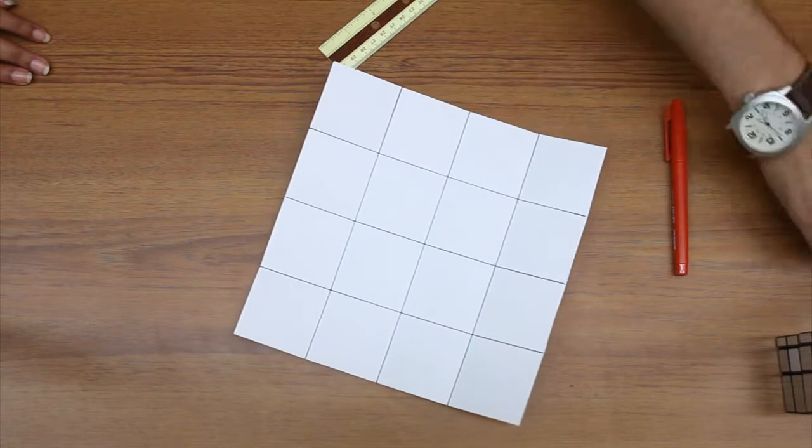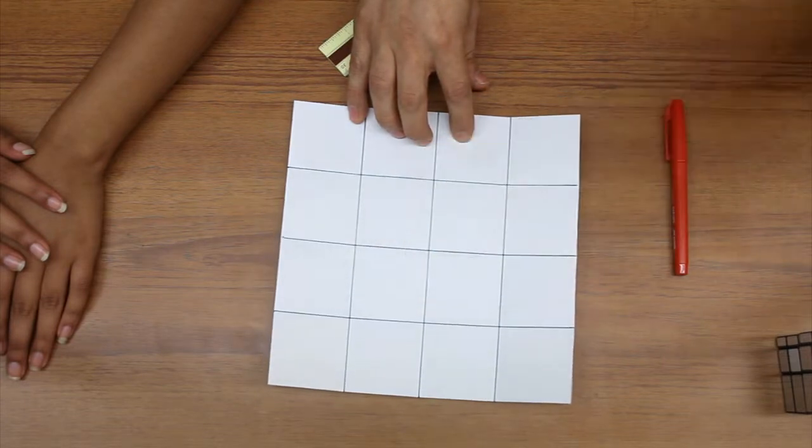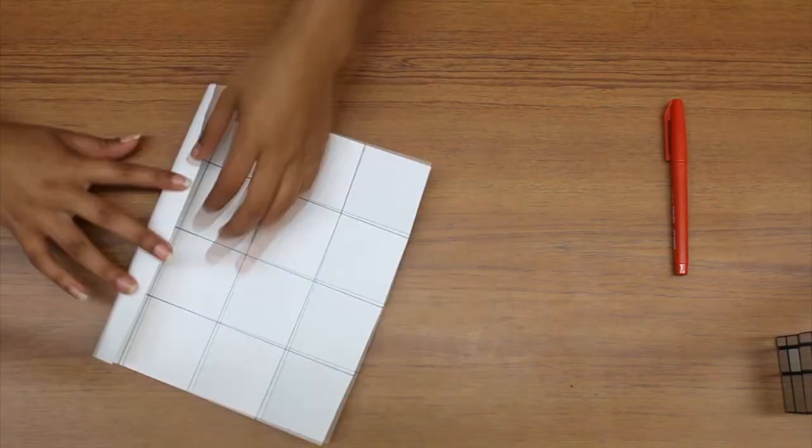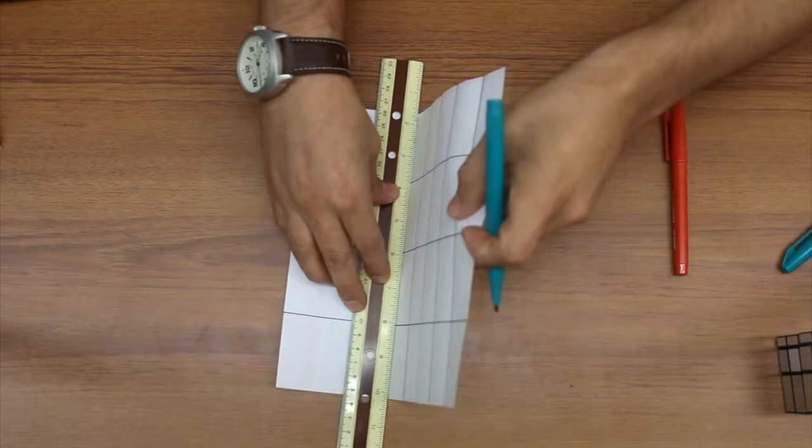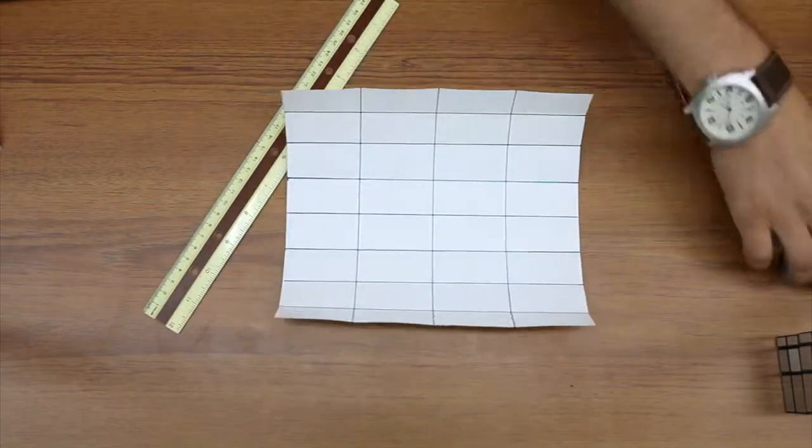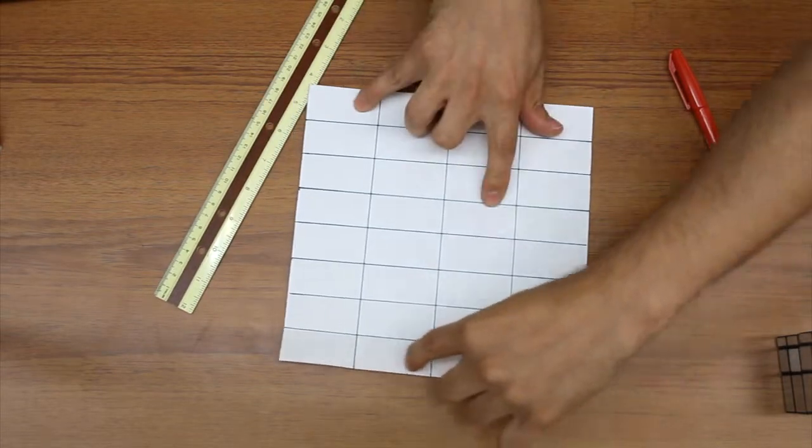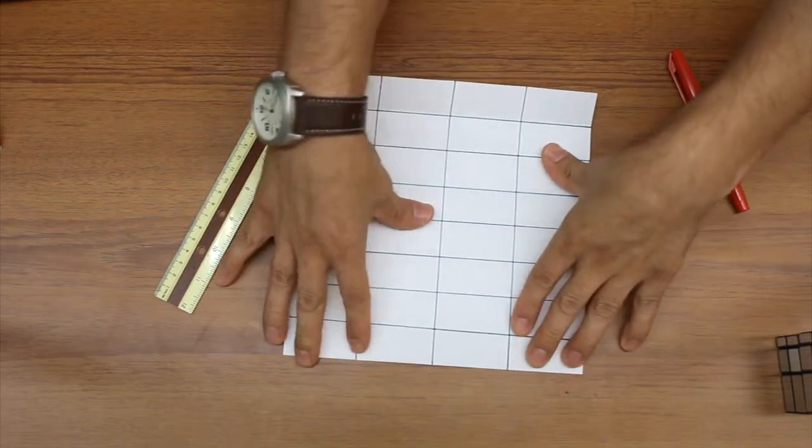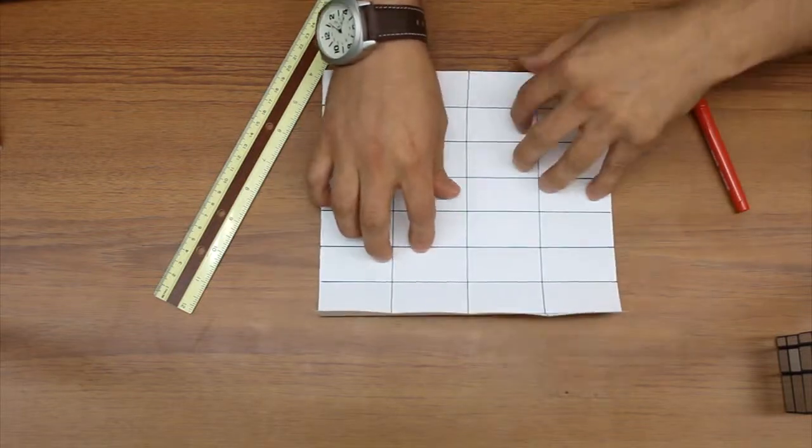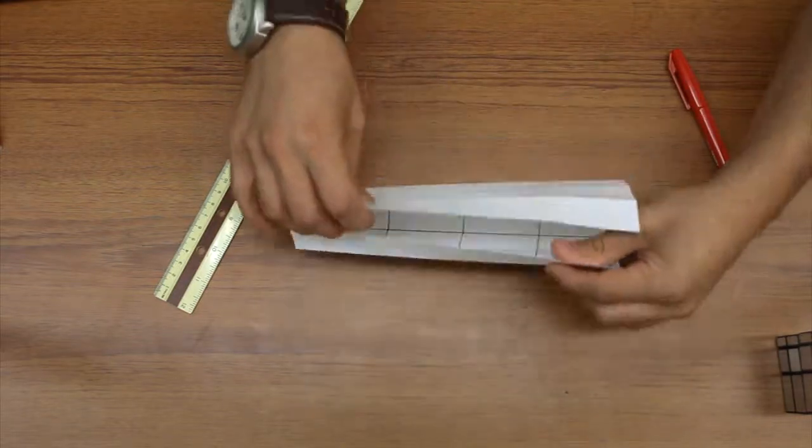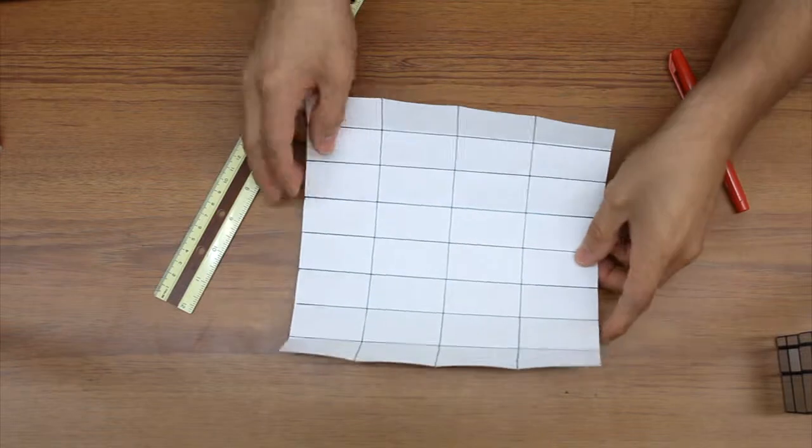So just so that you guys at home or at your computer can see what it is that we are doing, I'm just going to outline the folds that she made. What we're going to do now is we're going to take one of the sides and we're going to fold those squares in half yet again. So now as you can see you have a square that has four sections on one side and eight sections on the other.